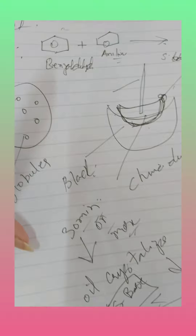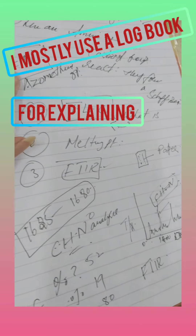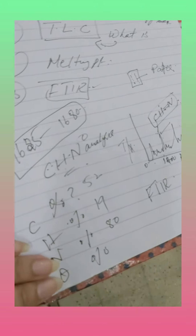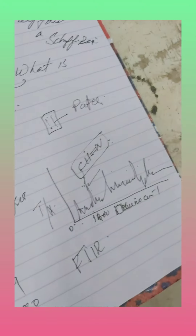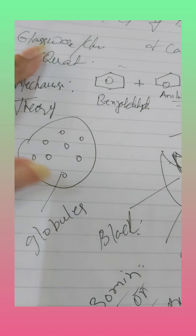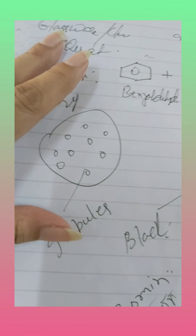I told them how they are going to heat the compound, how they are going to react benzaldehyde and aniline, and they are going to get a Schiff base — their organic compound. I explained how they will confirm whether it's formed through different techniques: TLC, melting point, FTIR, etc. I also explained CHN/CHNO analysis and FTIR, and told them they are going to get crystals in the end as their final product.